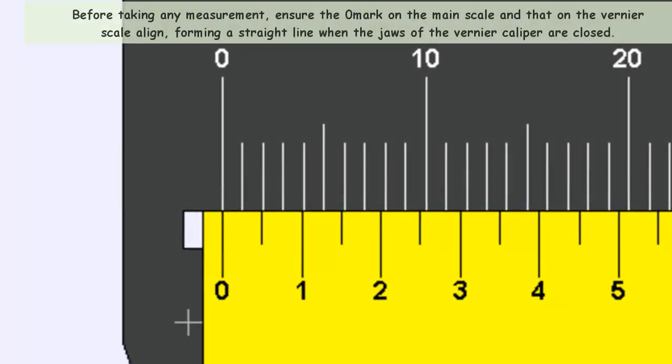When the jaws are closed, make sure that the main scale 0 and the vernier scale 0 form a straight line.